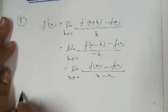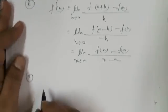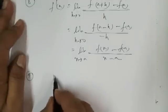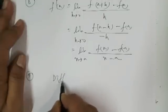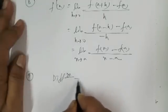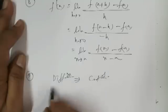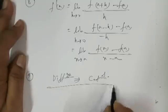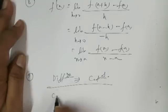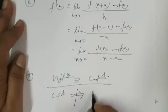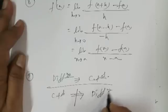Point number nine is continuity versus differentiability. If a function is differentiable, then this function must be continuous. And if a function is continuous, then we cannot be sure that the function is differentiable.